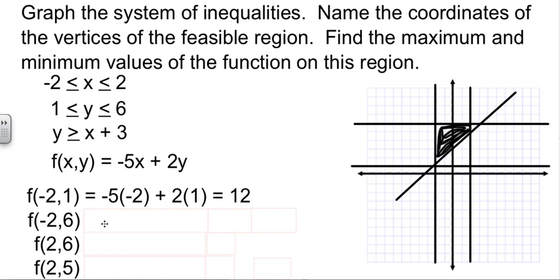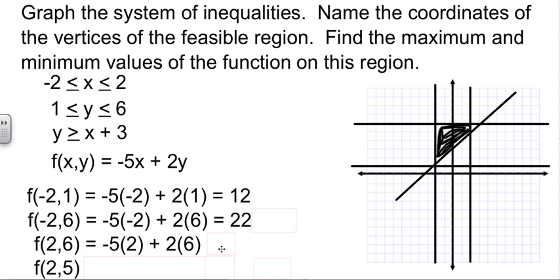Let's plug in the negative 2, 6. Hopefully, I did the arithmetic there better. That's 10 plus 12, 22. Just plugging and chugging here. Plug in 2 and 6. Negative 10 plus 12 is 2. And plug in 2 and 5. Negative 10 plus 10 is 0.